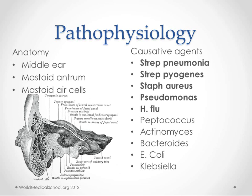We'll talk in a second about the anatomy and how the middle ear is connected to the mastoid area. The causative agents are usually some of the same ones that cause acute otitis media, but also Pseudomonas, which you don't see as much in acute otitis media, and Staph aureus and Strep pyogenes. Some anaerobes and gram negatives can also show up, but those are a lot less common.